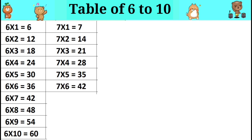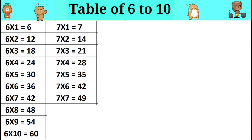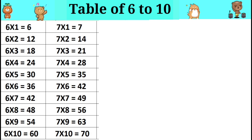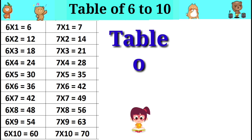Seven sixes are forty-two. Seven sevens are forty-nine. Seven eights are fifty-six. Seven nines are sixty-three. Seven tens are seventy.